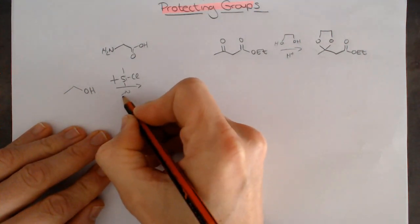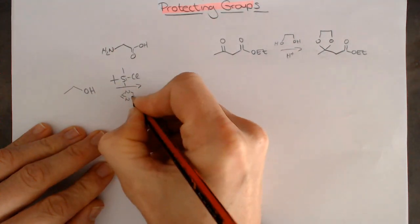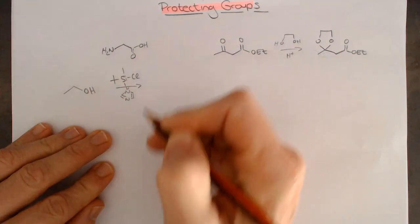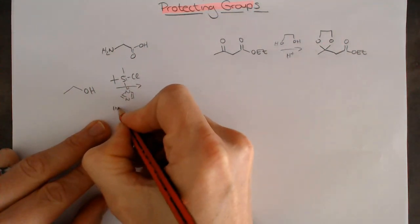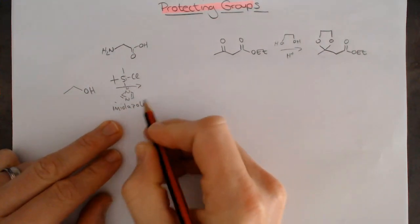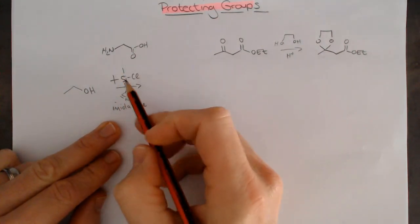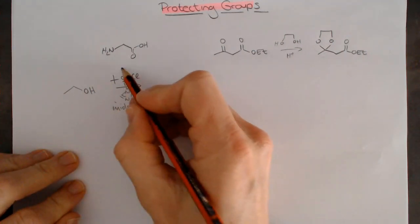It turns out that the best base to use is imidazole. Imidazole just turns out to be one of the most efficient ways of introducing a TBDMS group, tertiary butyl dimethylsilane.